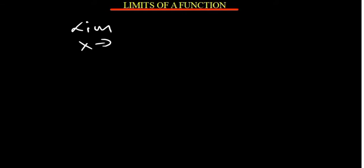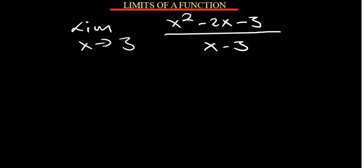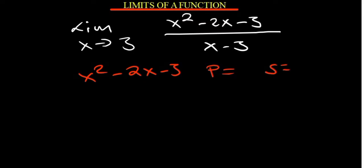Let's say you have the limit as x approaches 3 for the function x squared minus 2x minus 3 divided by x minus 3. When you plug in the value of x it's going to be undefined as well. So we need to factorize the numerator. For x squared minus 2x minus 3, we use the product-sum method: the product is the coefficient of x squared times the constant, which is negative 3. The sum is the b part, which is negative 2. The factors are negative 3 and 1.